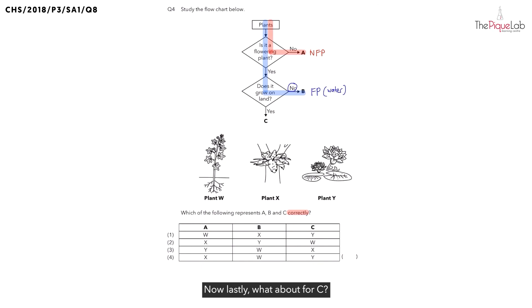Lastly, what about for C? Same thing. Take another color highlighter. I want you to highlight from the start all the way to C. From this purple colored highlighter, we can tell, is C a flowering plant?